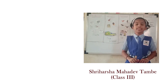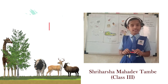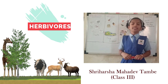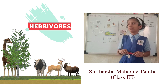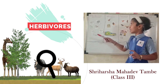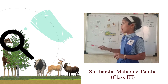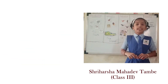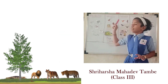The first category is Herbivores. Animals that eat only plants are called Herbivores. They have sharp teeth and flat teeth to chew grass and plants. For example, cow, deer, giraffe, etc.